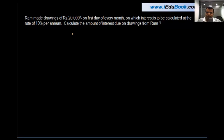Let's focus on this question: Ram made drawings of Rs. 20,000 on the first day of every month. So the amount of drawings which Ram made equals Rs. 20,000, and these drawings are made on the first day of every month.